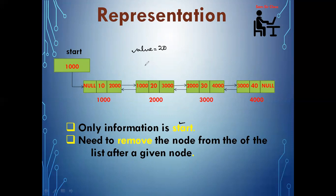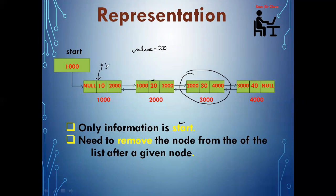We have to delete after the given item. Suppose the value you are entering — after this value I need to delete. For example, suppose I am entering 20, that means after node 20 the next node is present, and that is what I am supposed to delete. So first we'll assign the start value to ptr.